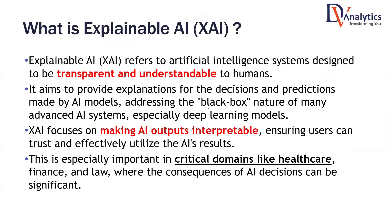Somehow we have to explain. So what is Explainable AI? It refers to artificial intelligence systems that are designed to be transparent — what is happening inside, we have to explain at a certain level, and understandable. It aims to provide explanations for the decisions and predictions made by AI models like artificial neural networks, addressing the black box nature of many advanced AI systems. Most advanced AI models like Random Forest, Boosting, ANN, and CNN are all black box, and we want to make them a little bit more interpretable.